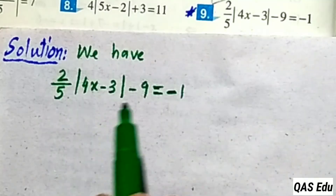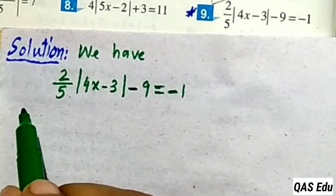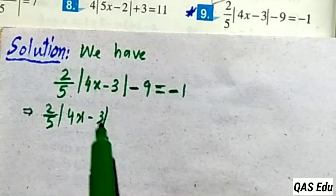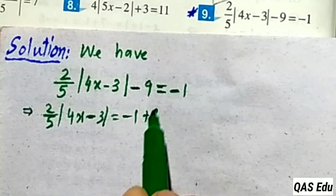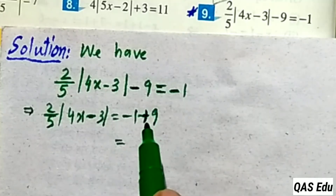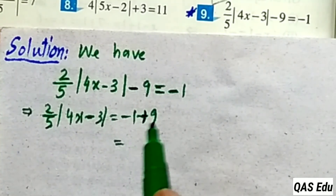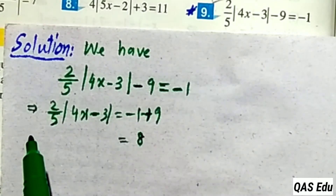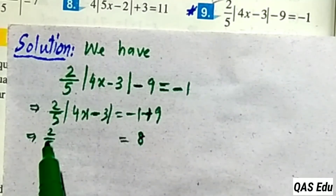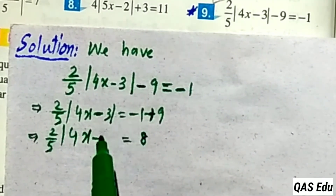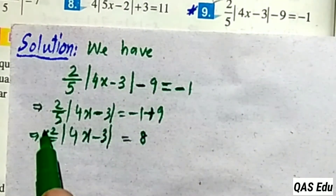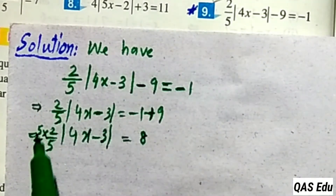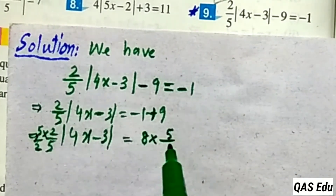Question 9: the equation contains an absolute value. We isolate 4x minus 3 first. Move minus 9 to the right as plus 9: minus 1 plus 9 gives — with the signs — 8. Then multiply both sides by 2 over 5 (the reciprocal of 5 over 2). Multiply: 5 over 2 times 5 over 2 — the 5s and 2s cancel.